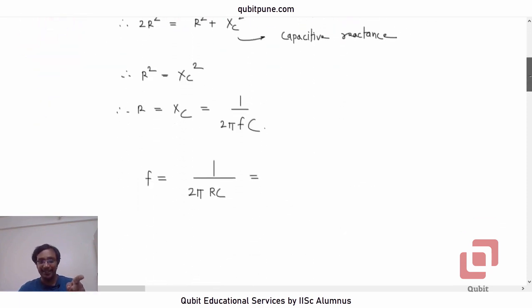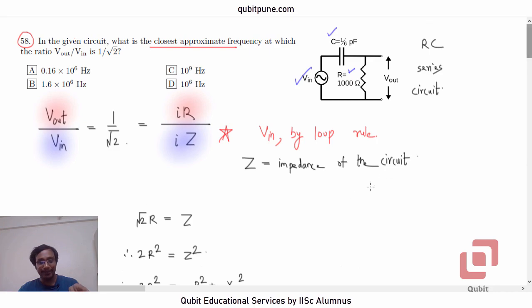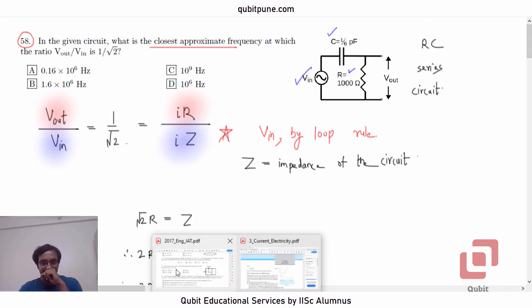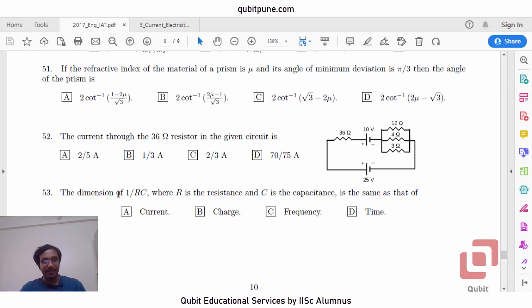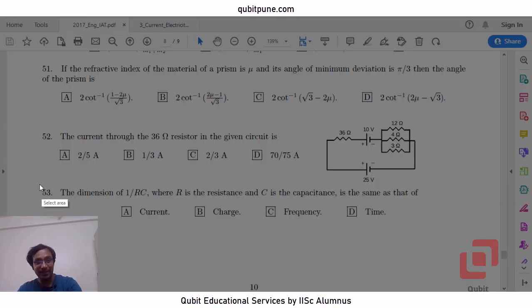Well, actually, let me just remind you, in the same paper, there was a sum. In the same paper, there was a sum, the dimension of 1 upon RC, question number 53, where R is the resistance and C is the capacitor is same as that of... The answer to this question can be found here.